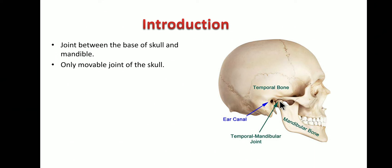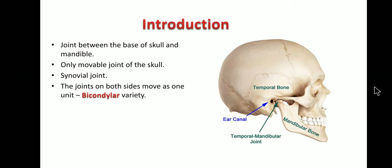The head of the mandible is like a condyle that fits into a fossa or depression. With respect to variety, it is condylar — but here we call it bicondylar because both condyles move as one unit. You cannot move one joint alone. Another example of condylar variety is the knee joint, but the knee joints can act independently, whereas here both condyles move together as one unit.